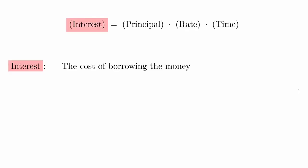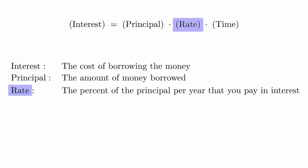The interest is the actual cost of the loan. The principal is the amount of money being borrowed. The interest rate is the percent of the principal per year that you pay in interest, also known as the annual percentage rate, or APR. The time is the length of the loan in years, which is also called the term.